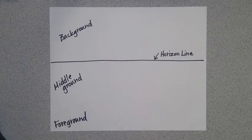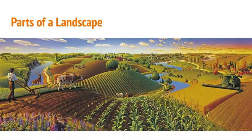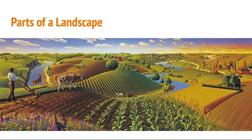Let me give you an example. This painting is called Harvest Panorama, and it's by Robin Moline. This is a great example for you to take a look and identify the parts of a landscape.